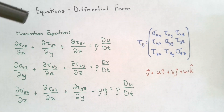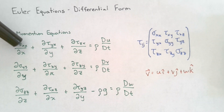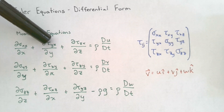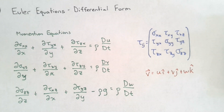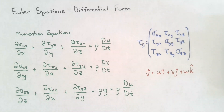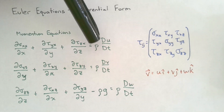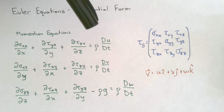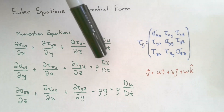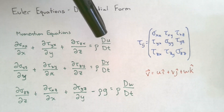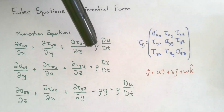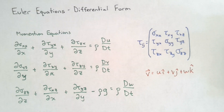Looking at our momentum equation, we see that we have a normal stress component and two shear stress components. In the case of the z-direction momentum equation we also have the gravitational force expressed, and we get that the sum of the forces acting on the fluid element should be equal to the density of the fluid times the material derivative of the velocity components in the x, y, and z direction.